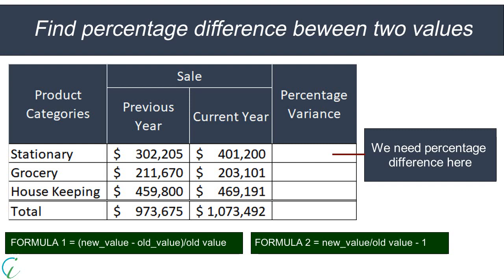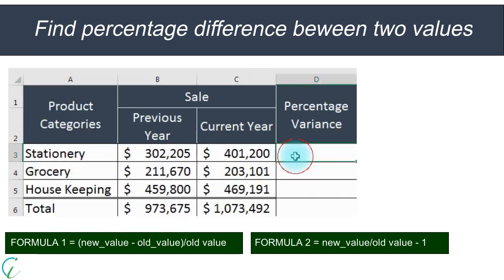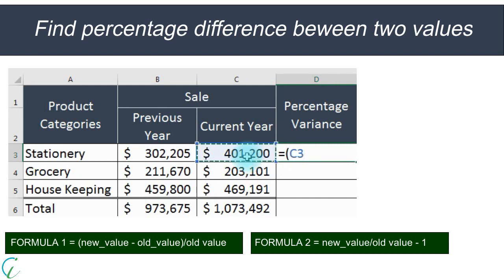The formula is: find the difference between an old value and the new value and divide by the old value. Here in our example, C3 is the current year sale or new value, and B3 is the previous year sale or old value. Within parenthesis, subtract B3 from C3, and divide by B3 outside the parenthesis.